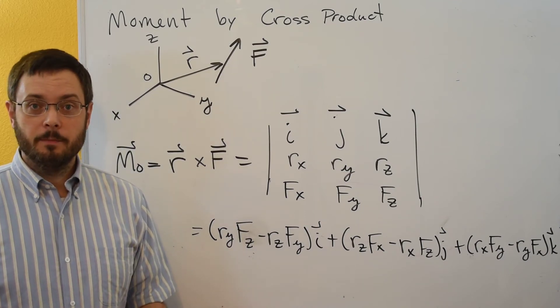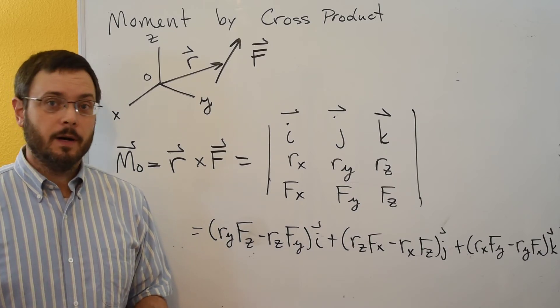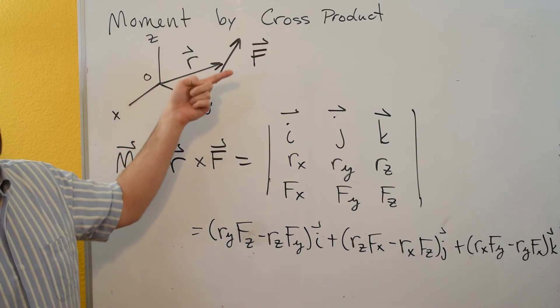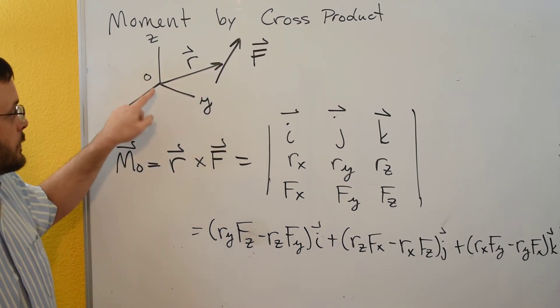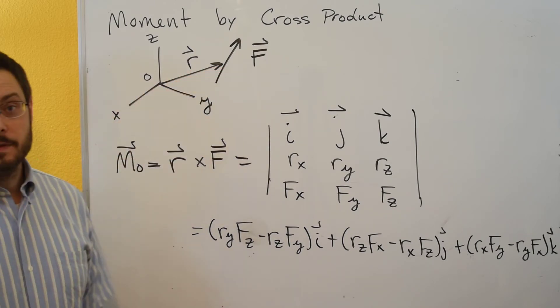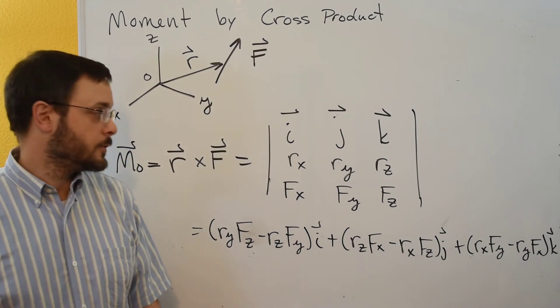Typically the force is applied at some point and that's the point you'll probably know the most about, so that's probably where you'll draw the position vector from—the point where you're taking the moment about to the point where the force is acting. But it could be anywhere along the line of action of the force.